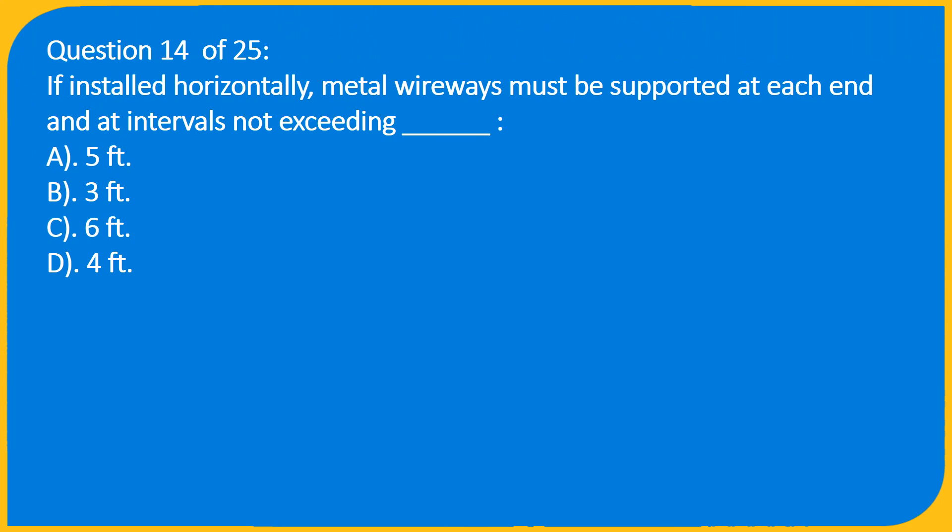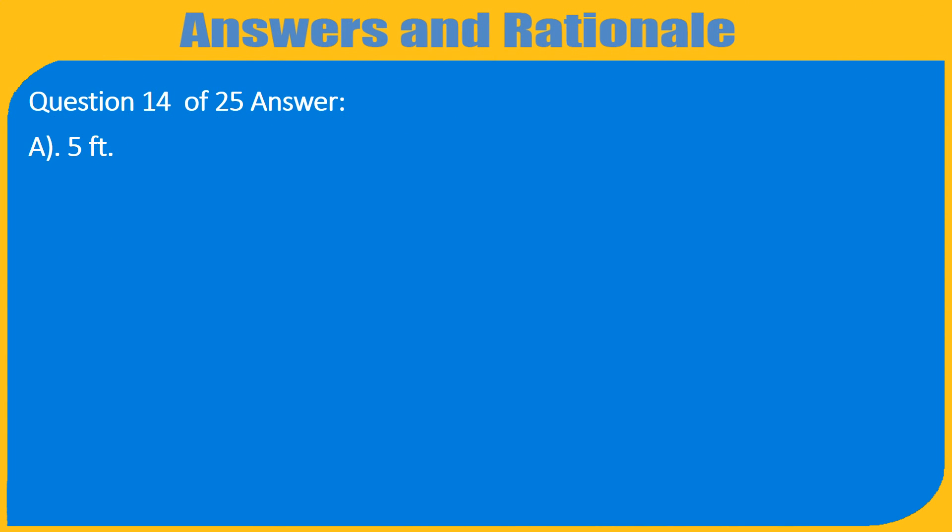Question 14 of 25: If installed horizontally, metal wireways must be supported at each end and at intervals not exceeding how many feet? A. 5 feet, B. 3 feet, C. 6 feet, D. 4 feet. Answer: A. 5 feet.